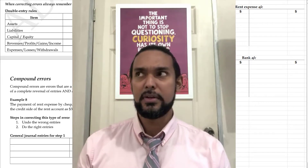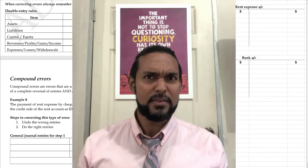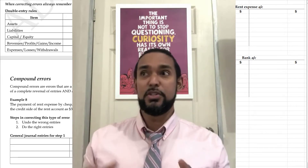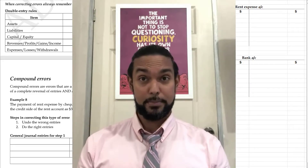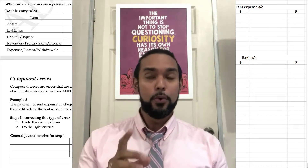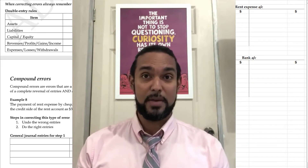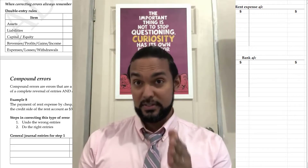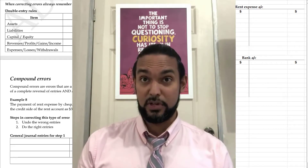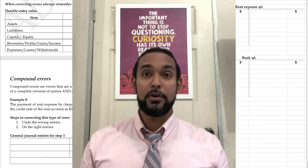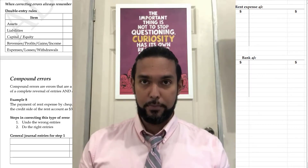And you might be saying, well, my textbook only has seven types of errors, my teacher only gave us seven types of errors — but there is an eighth type. And no, we're not talking about errors that do affect the trial balance. We are still talking about errors that do not affect the trial balance. This type of error is called a compound error.